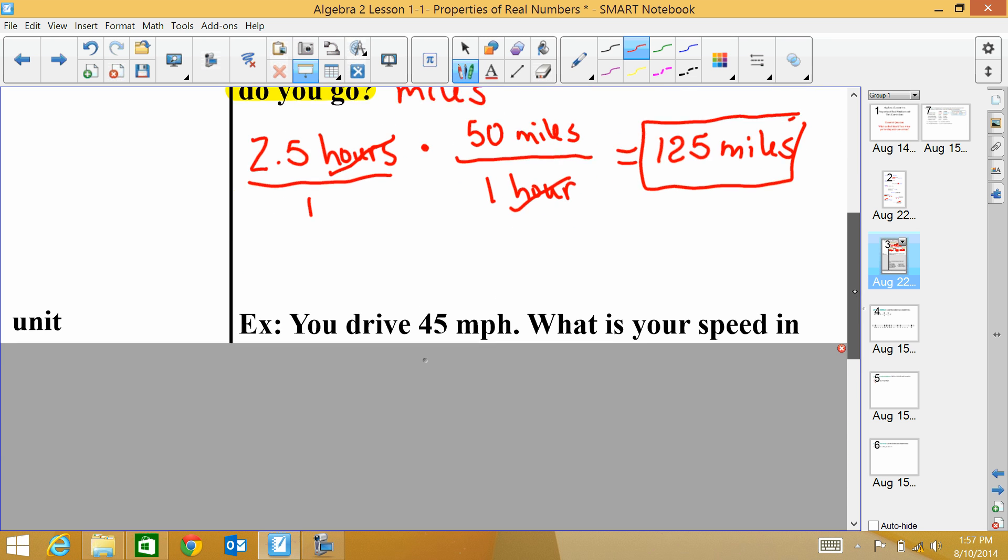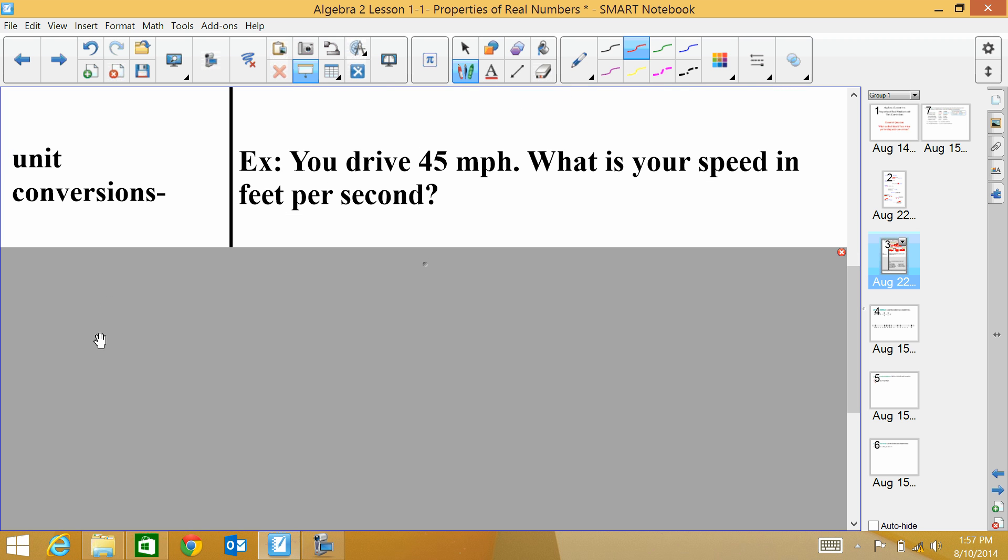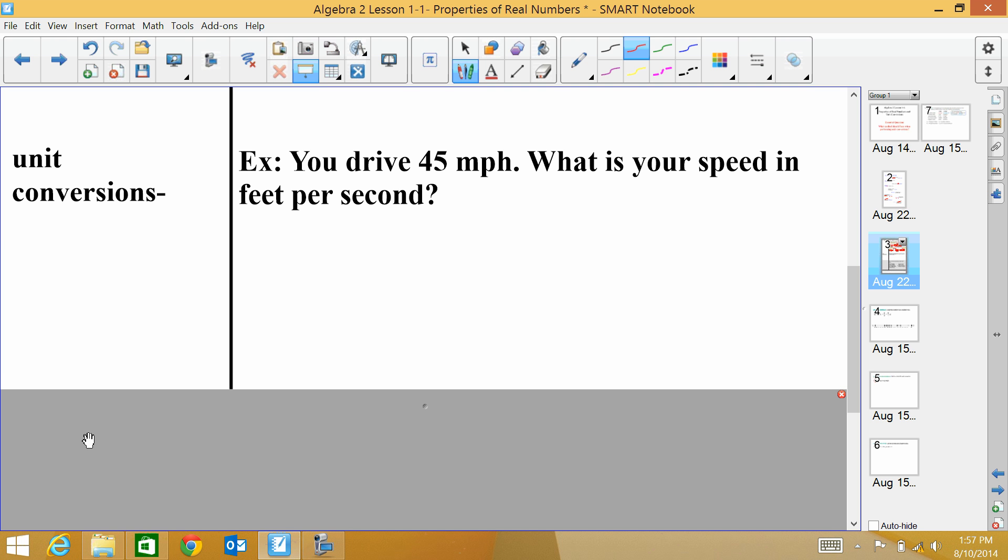Now we're going to get into some conversions. A conversion is when you change something. So it says you drive 45 miles per hour. What is your speed in feet per second? So we're changing miles per hour to feet per second. So we're converting these. So we're going to set this up similar to the last problem that we did. First, I always write down what I have. So if you want to write down the steps, first you always write down what you have. So I have 45 miles per hour. So that's per one hour. So in one hour, I'm going 45 miles.